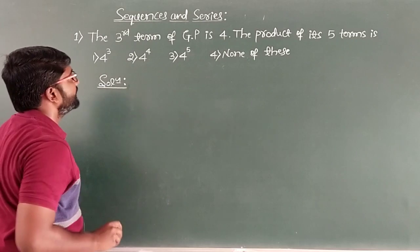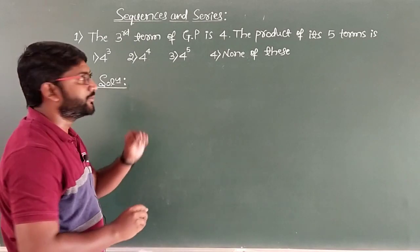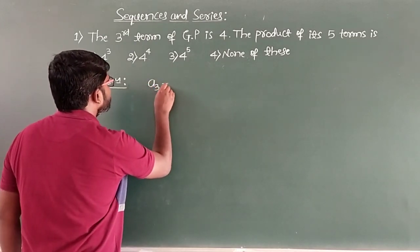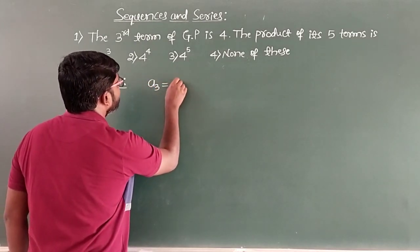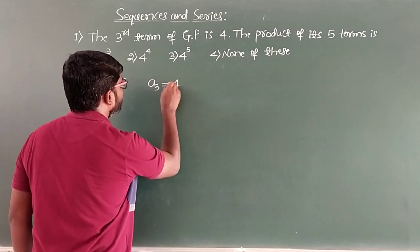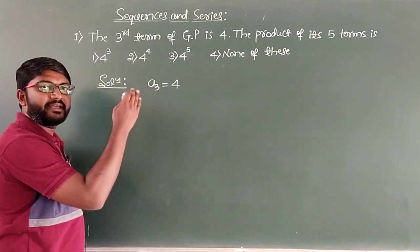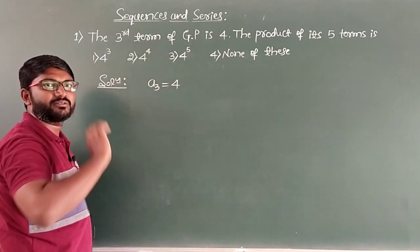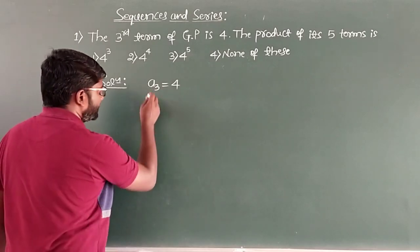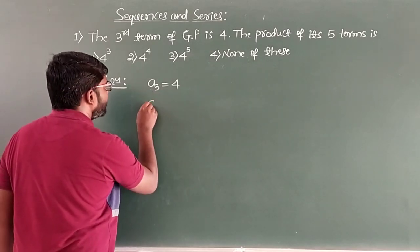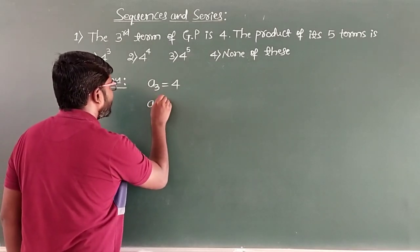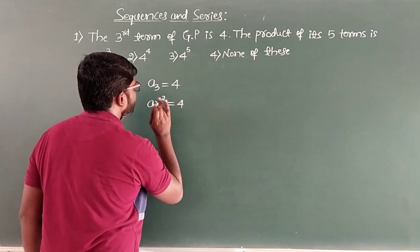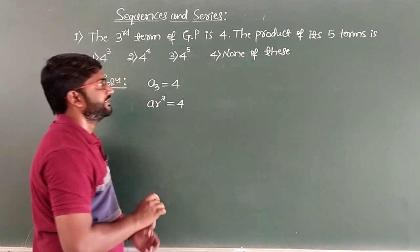The third term of a GP is 4. So the given information is A3 = 4. The general form of a GP is A, AR, AR², AR³ and so on. So the third term means AR² = 4. This is the given condition.